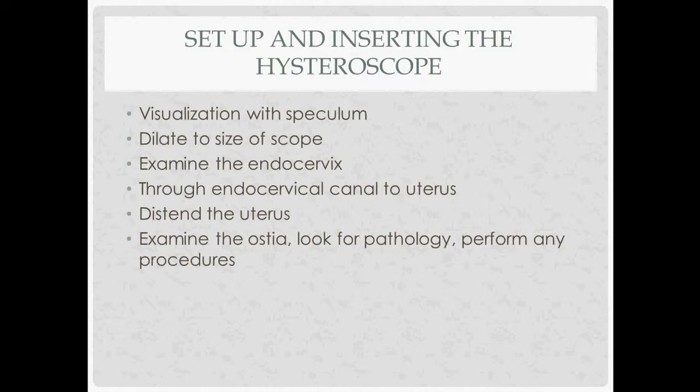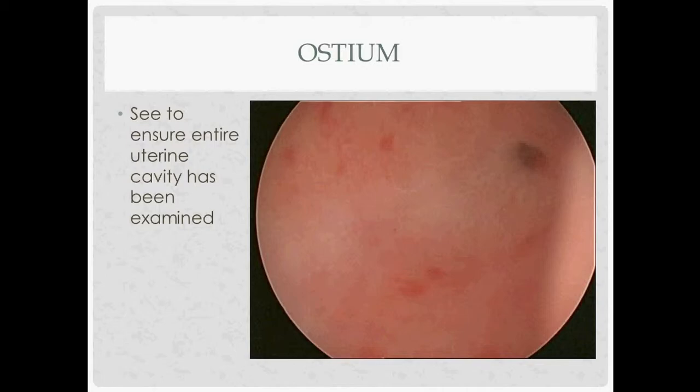For setup and inserting the scope: get good visualization with the speculum, dilate the cervix to the size of the scope, put the scope in to get a nice seal, examine the endocervix as you go along, proceed through the endocervical canal to the uterus, distend the uterus with the distension media, and use the lowest pressure you can to get good visualization. Look at the ostia and look for pathology. You want to find both ostia because that means you've looked at the entire uterine cavity — if you can't see one ostium, there's probably an area of the uterine cavity you haven't examined, and that might be where a problem is.